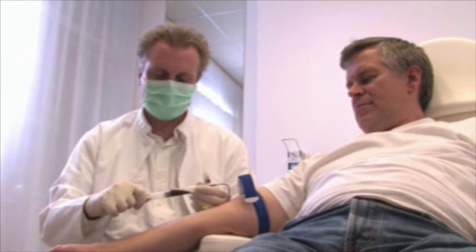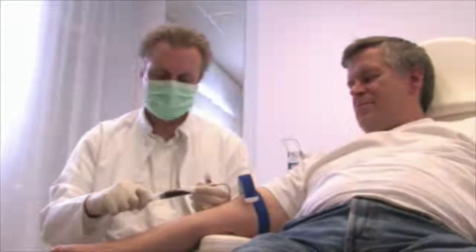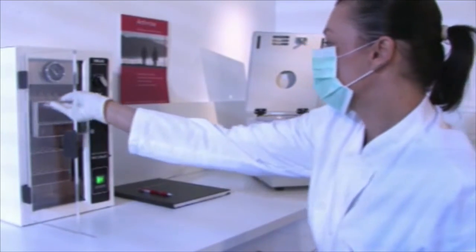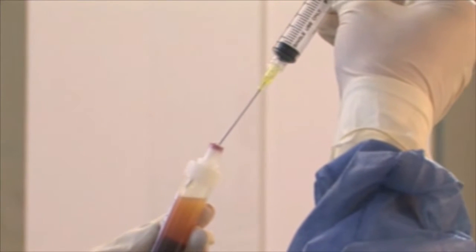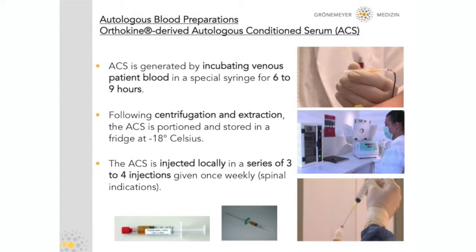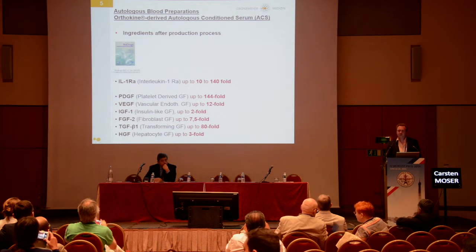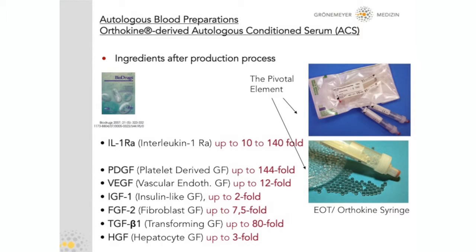ACS, as shown in this video, is prepared by incubating venous patient blood in a special syringe. After a centrifugation and extraction process, the ACS is portioned and stored. In contrast to PRP preparation, it can be stored in a fridge at minus 18 degrees Celsius. The preparation process, which is done once per patient, is followed by injections given once or twice weekly — three or four injections for spinal diseases. During incubation, the amounts of interleukin-1 receptor antagonist as well as growth factors are elevated after production.